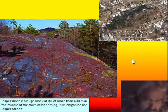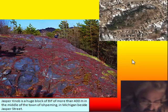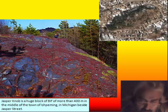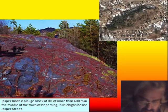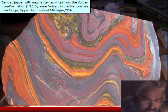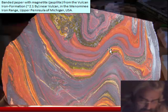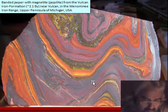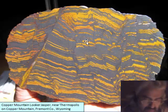This is another famous piece of jasper — a piece of BIF. It is a huge hill about 400 meters high, located in the middle of a town in Michigan, in the town of Ishpeming. Curiously, the street behind this knob — Jasper Knob — is called Jasper Street. This is the aspect of the BIF of Michigan: a typical jasper layer folded by orogenesis, and it is 2 billion years old — an alternation of magnetite and jasper. This is another kind of BIF jasper, not folded but fractured, from Wyoming — the Copper Mountain looker jasper.